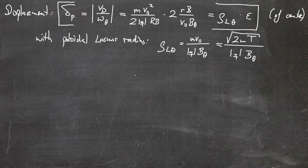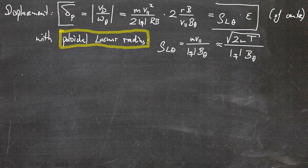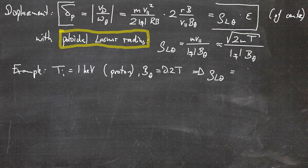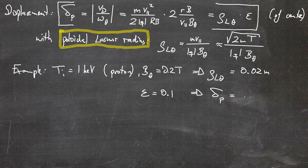Here we introduced the poloidal Larmor radius: rho_L_theta equals M v_parallel over Q B_theta, approximated as sqrt(2M times temperature) over Q B_theta, assuming a thermal plasma. For an example: ion temperature of 1 keV, hydrogen plasma, poloidal magnetic field of 0.2 Tesla, this gives a poloidal Larmor radius of about 2 cm, and with inverse aspect ratio of 0.1, a displacement of about 2 mm.